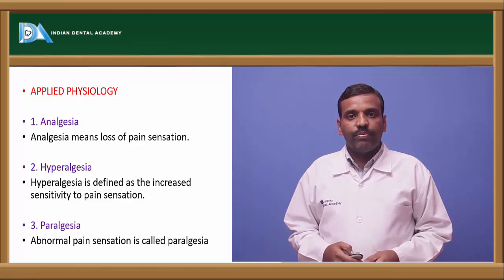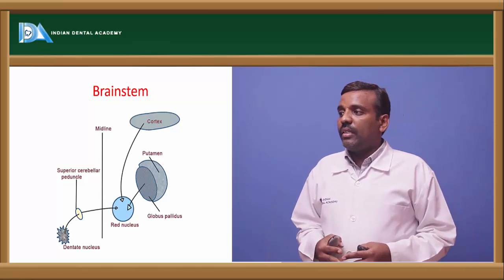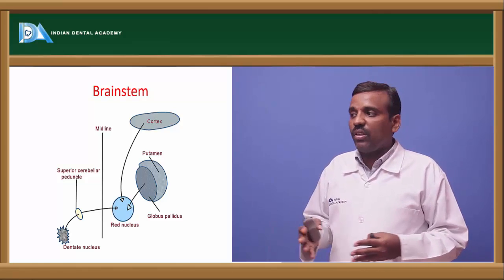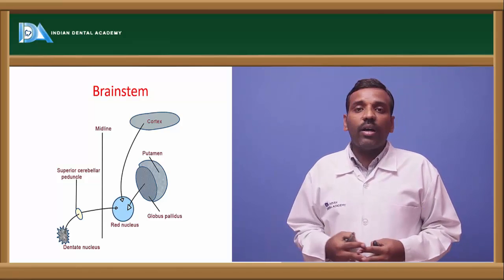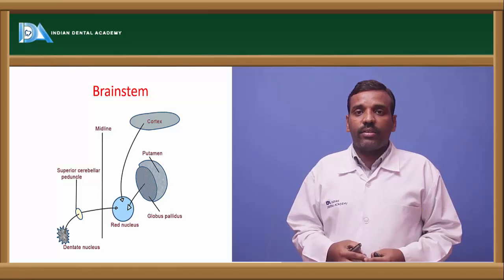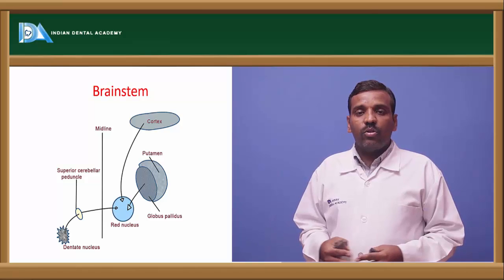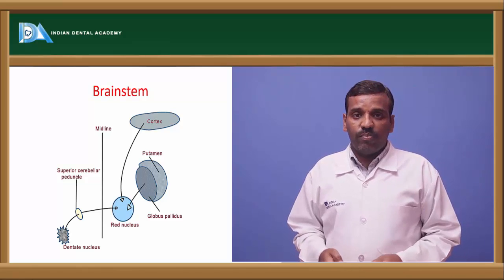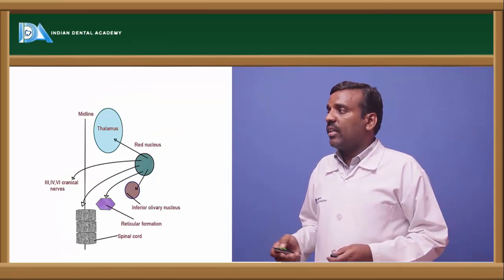The brain stem: the dentate nucleus makes connections across the midline. From the dentate nucleus, through the superior cerebellar peduncle, it reaches the red nucleus and then the cortex. Information also reaches the red nucleus through the putamen and globus pallidus. These are the efferent connections.